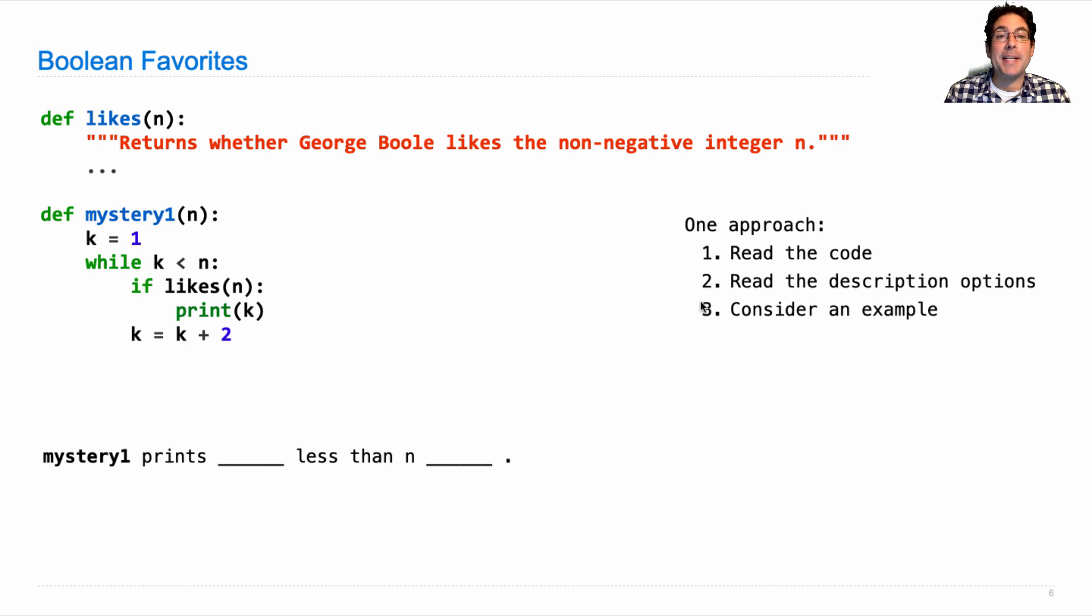Step three might not be necessary, but it's still a good idea because it lets you check your work. So read the code: mystery one takes in n, sets k equal to one, while k is less than n, if likes n, print k, then add two to k.